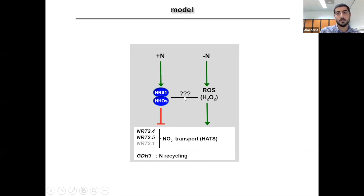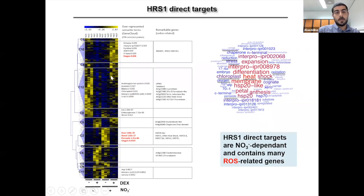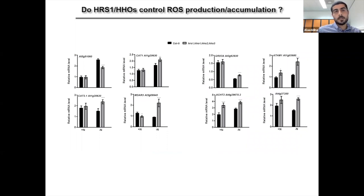And in the last part, I will be talking about the anti-regulation of ROS and HHO transcription factors. Back to the TARGET data, HRS1 direct targets are nitrate dependent and contain many ROS-related genes such as RBOHD, catalase, thioredoxin, et cetera. And to validate these data, we performed qPCR to measure the expression of these genes. And we found that most of them are upregulated in the quadruple mutant, suggesting that HRS1 is involved in repressing the production of ROS.